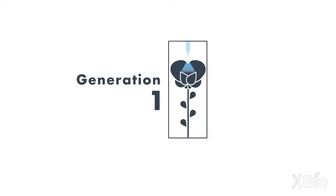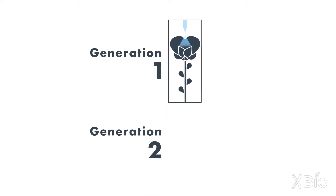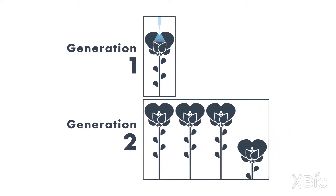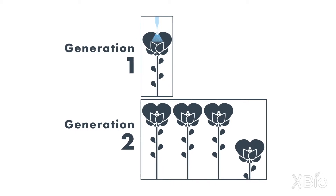The question Mendel might have asked at that point is whether the character that determines shortness in a plant had completely disappeared. So he did the next really critical experiment, which is he allowed those tall plants to self-fertilize themselves. And the answer was three of the progeny are tall and one of the progeny is short. So in that original tall plant in the first generation, the short character had not been destroyed. It had not completely disappeared — it had been dominated by the character tall.